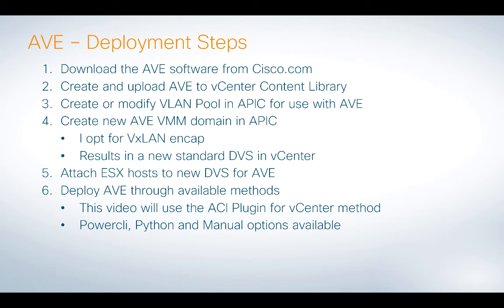The deployment steps are as follows, and I'll show you all of this live in the next video. First, we're going to download the AVE software from Cisco.com. If you have ACI, you freely have access to AVE — there's no additional license required. We're going to upload that software into vCenter using its Content Library feature. Then we go into APIC and create or modify a VLAN pool for use with AVE. I'll show you what that looks like because there are some new capabilities in 3.1 that weren't there before.